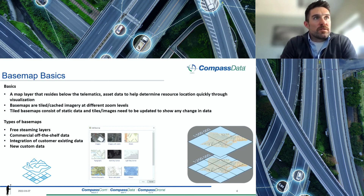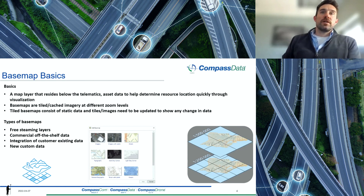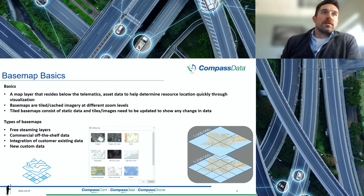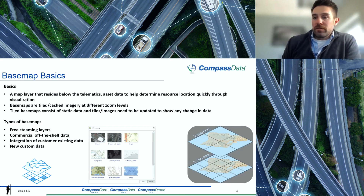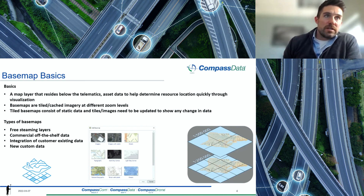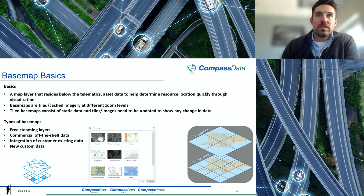So the types of base maps: there are free streaming layers that are available, which is really what this image shows here. There's commercial off-the-shelf data — either imagery or other vector data turned into raster data. There's integration of customer existing data, which I'll talk about in more detail. And then there's new custom data, which is really my expertise — how to get new data and the detail that folks need on their base map.